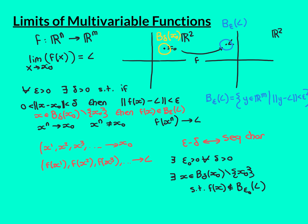So I've built a domain sequence whose image sequence doesn't converge to L, contradicting the sequence characterisation. If the epsilon-delta definition is not satisfied, I can do this and contradict the sequence characterisation being satisfied. Hence, if the sequence characterisation is satisfied, the epsilon-delta definition must also be satisfied. That completes our discussion of the proof that the epsilon-delta definition and the sequence characterisation for the limit of a multivariable function are equivalent. In the next part, we'll discuss the algebra of limits for functions and the definition of continuity.